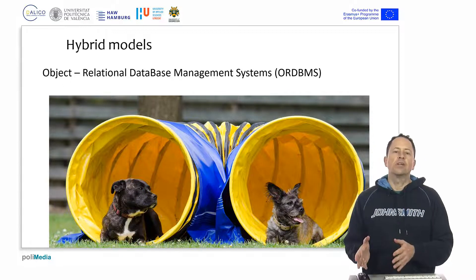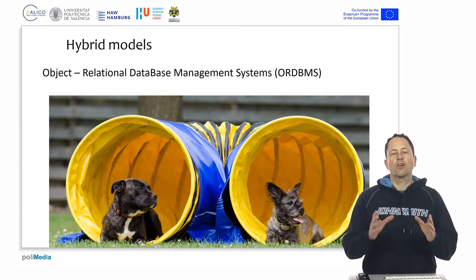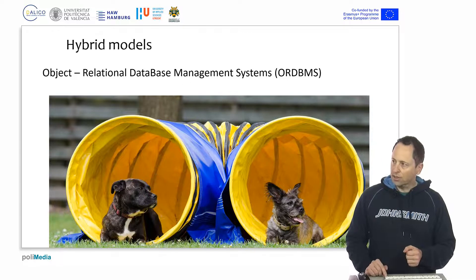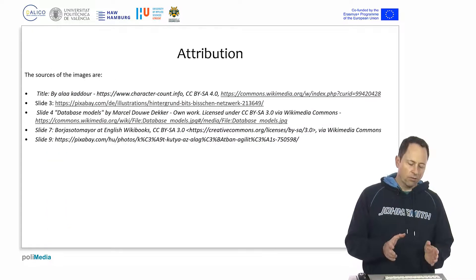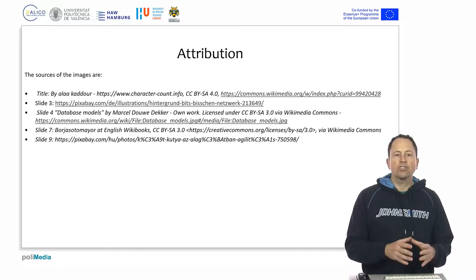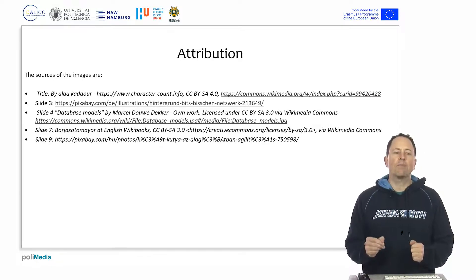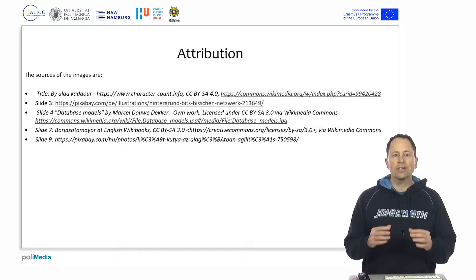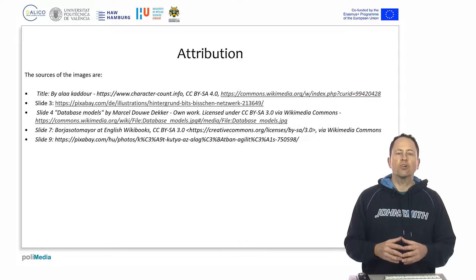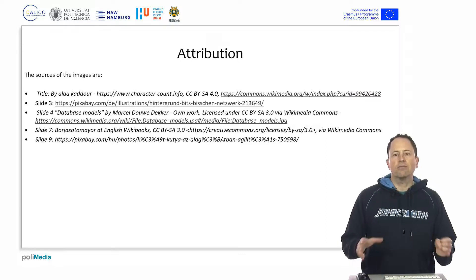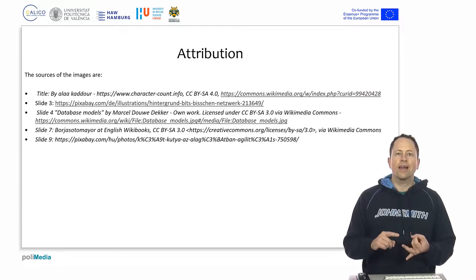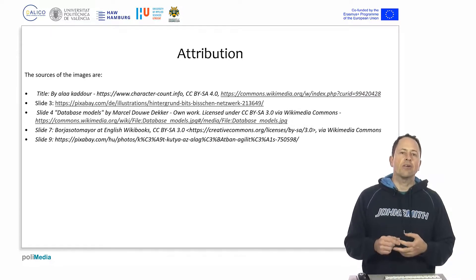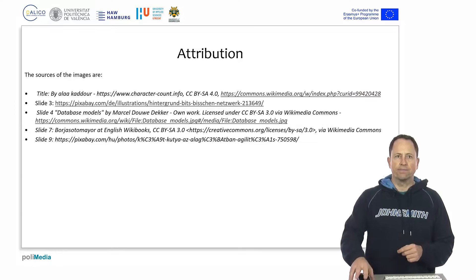Finally, there are hybrid models where databases are both relational and object-oriented. To summarize, we have seen what data is — structured information of various types — and we have defined what a database is: a systematic collection of data from which conclusions can be drawn and information can be extracted. We discussed the types of databases: the flat file, the hierarchical model, the network model, the relational model which is the most widely used today, the object-oriented model, and the hybrid model, which is a mixture of the two.